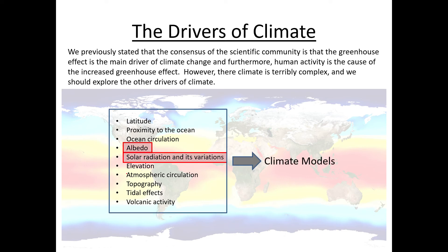It doesn't happen with every volcanic eruption, but particularly powerful ones have a big effect on global temperatures, at least in the short term. So the ones we're going to start with and concentrate on are albedo and solar radiation and its variations.